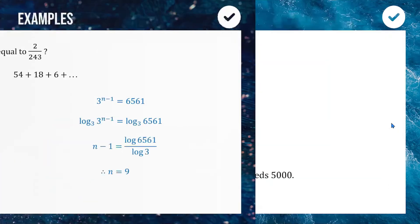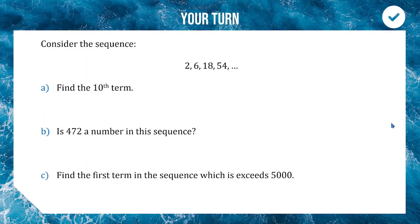Up next is a question I encourage you to pause and have a go at yourself — it's nothing too far from what we've just done. It's a geometric sequence: find the 10th term, find whether 472 is a number in this sequence without using trial and error, and find the first term in the sequence which is bigger than 5000. See how you go.